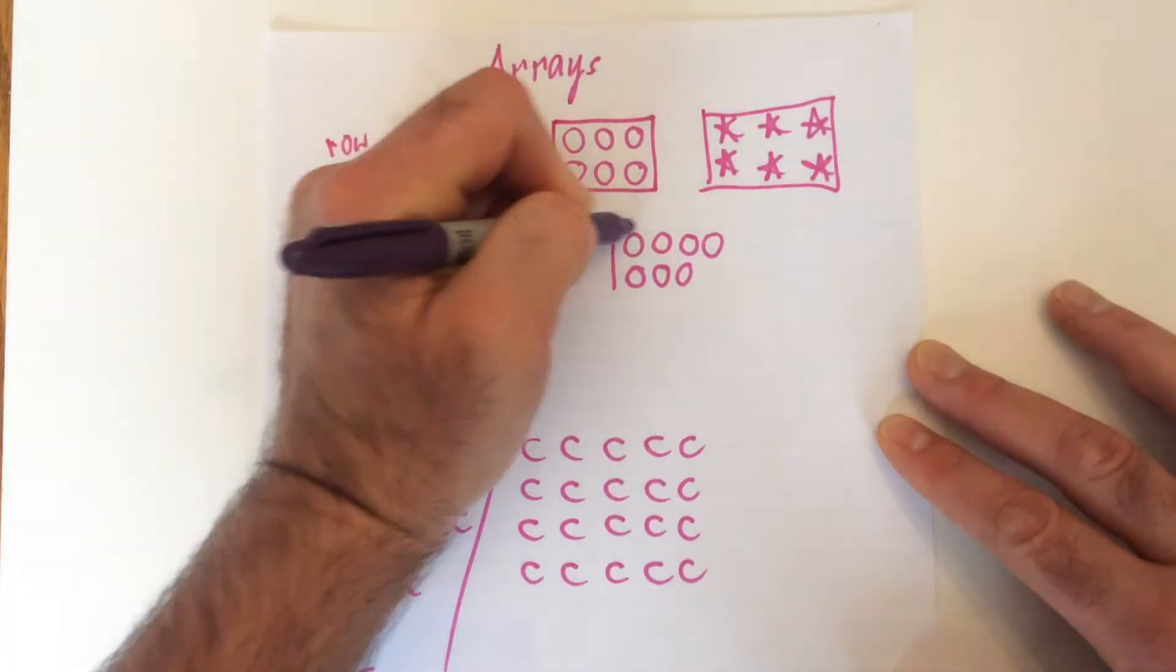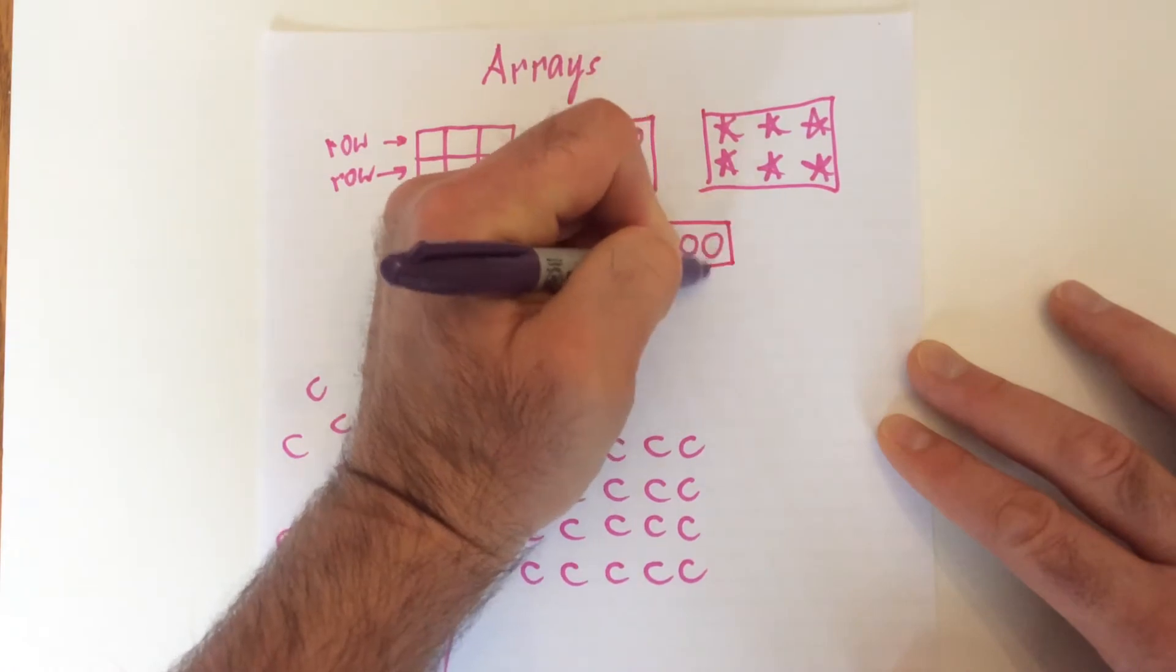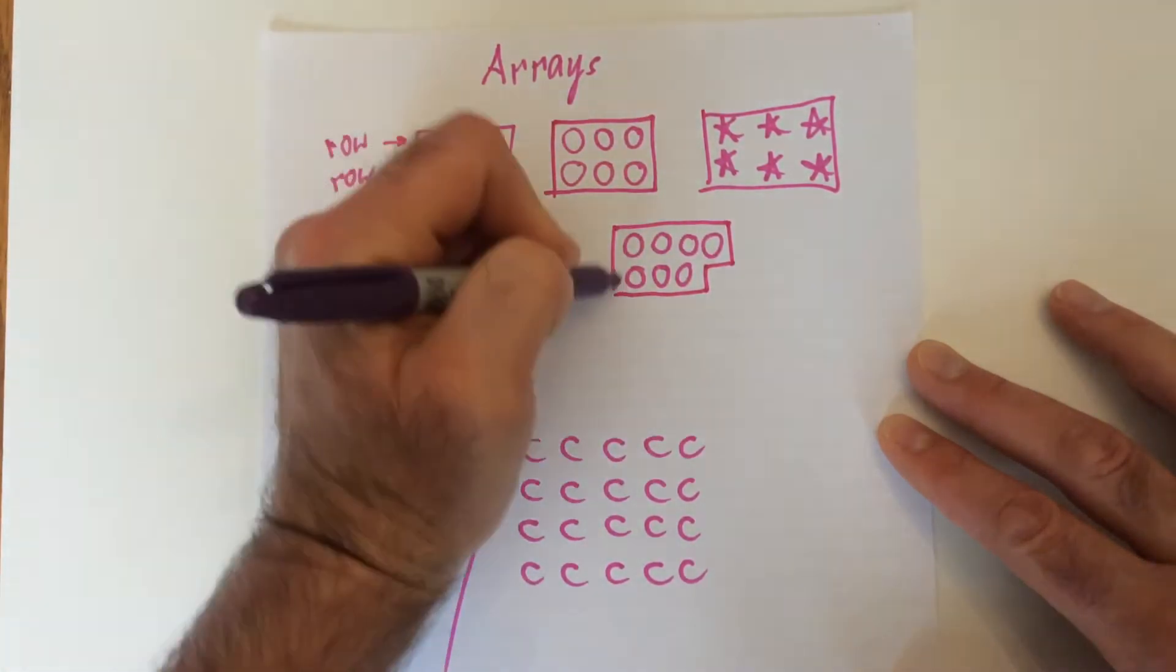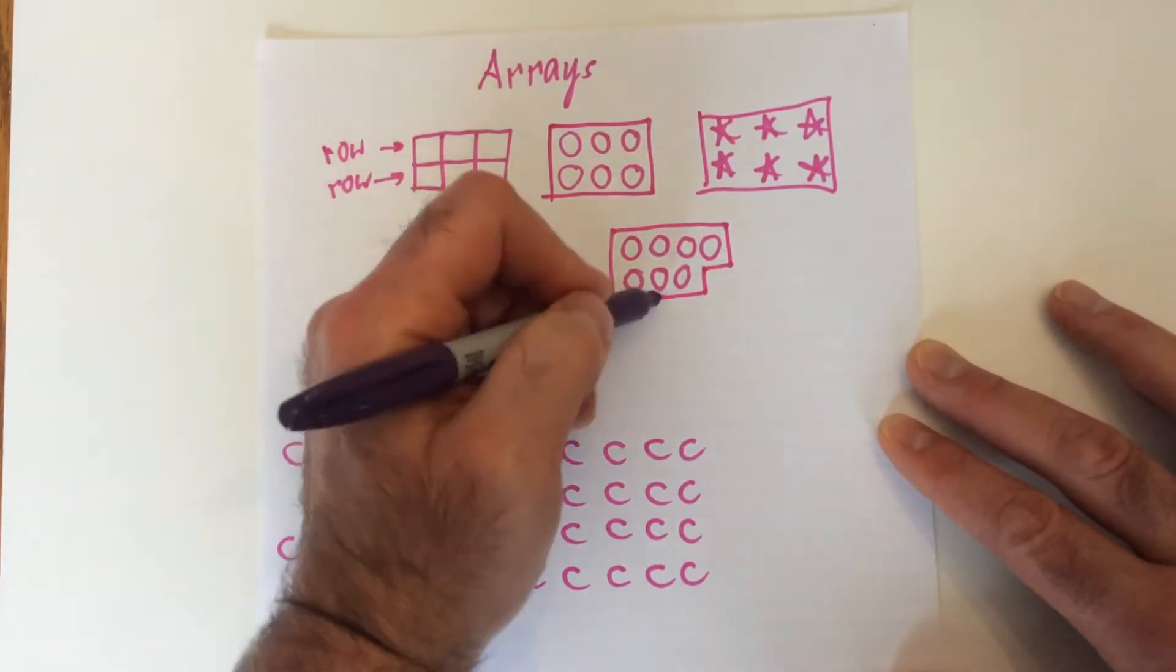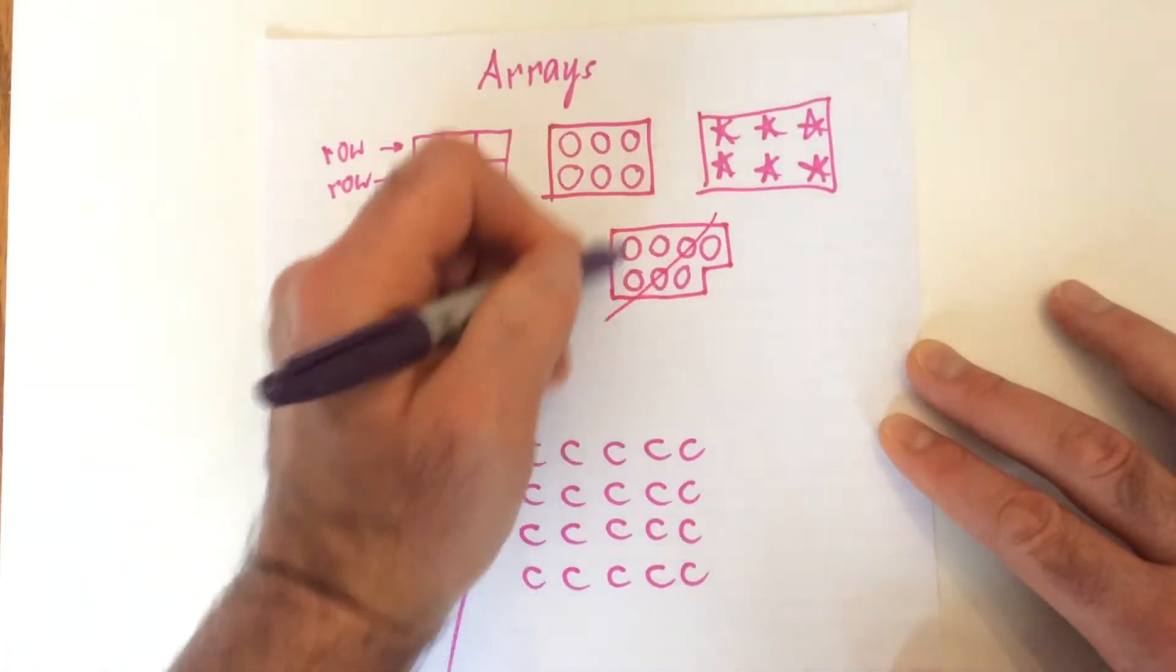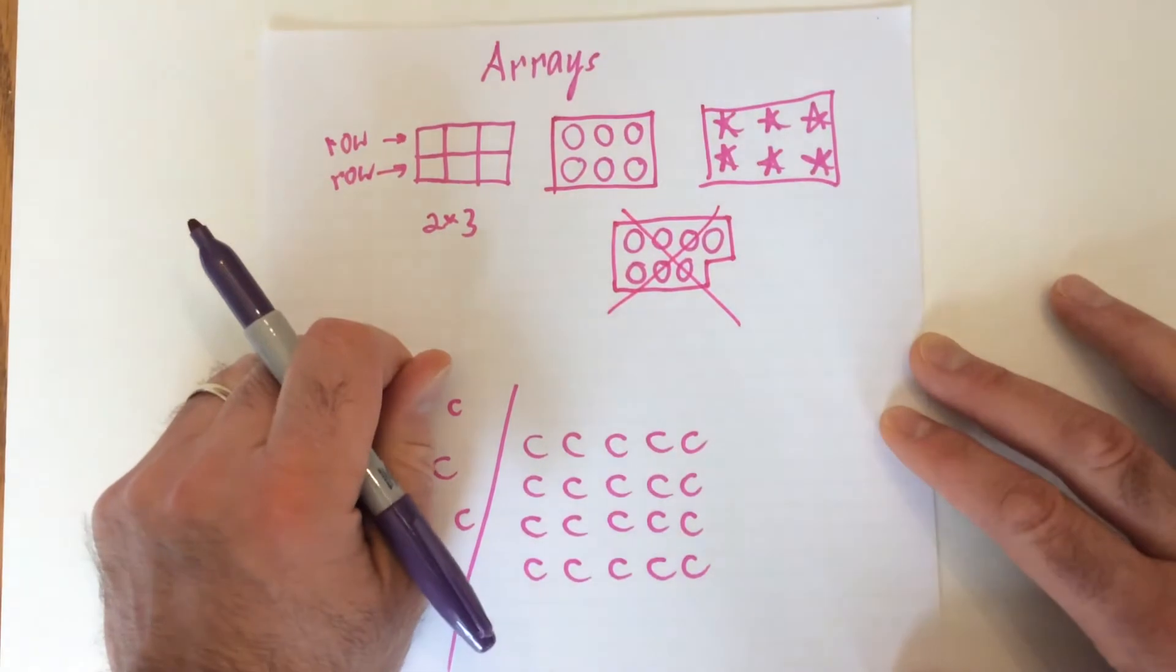And there's an equal amount in each row. So here's an example of not an array, because if I draw around each shape, it looks like that, and that is not a rectangle. Rectangle has four sides. This has more than four sides. So that's not an array.